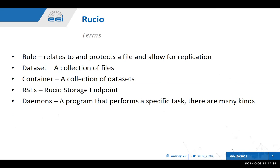I'll go through a few of the terms used within Ruscio just to make sure everyone's on the same page. A rule is something that relates to a file, dataset or container and protects it from deletion within the Ruscio environment, but also allows for it to be replicated. A dataset is a collection of files and a container is a collection of datasets. An RSE is basically just any endpoint that allows Ruscio to copy files to it and from it — this can be anything from a disk in your server, a tape archive, or cloud. A daemon is a program that performs a specific task; there are quite a number within Ruscio and they all do different things.